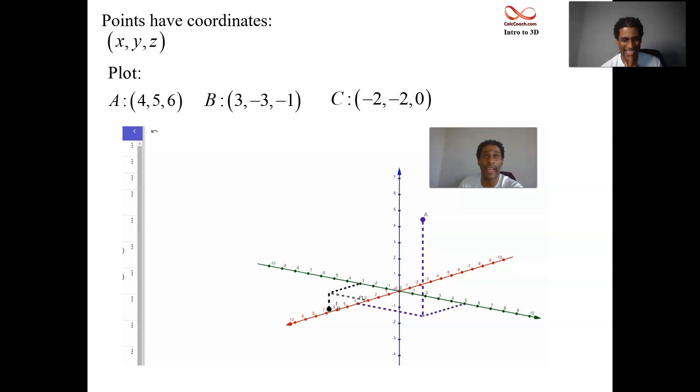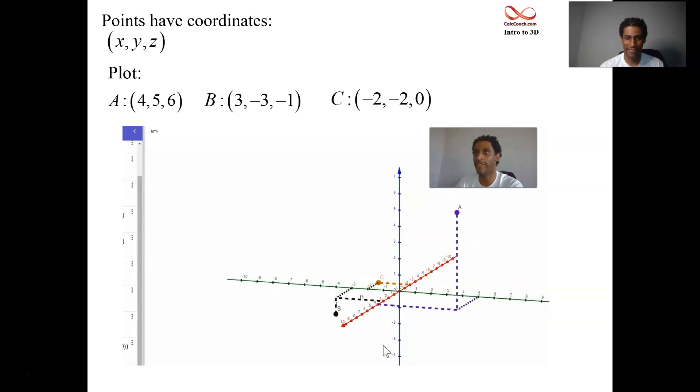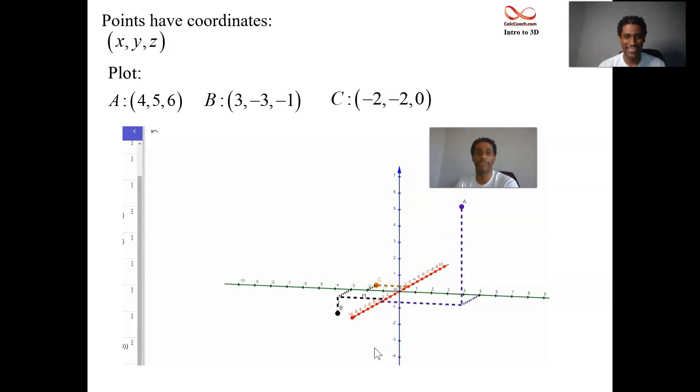And finally, finally, we have the point negative two, negative two, zero. Sorry, I don't know why those labels are on there. But anyway, so we go negative two along X and negative two along Y. That'll give us the point. That gets us to C. So those are the three points. C is on the X, Y plane. B is below the X, Y plane. A is above the X, Y plane, based on their Z values. So much better than a static drawing.